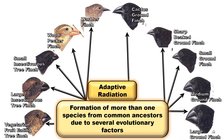We can define adaptive radiation as the formation of more than one species from a common ancestor due to several evolutionary factors. The tree-dwelling finches include fruit-eating finches, insect-eating finches, and the warbler finch. The ground-dwelling finches on the right side have developed seed-eating beaks. So from a common ancestor, these different species of finches were formed — a perfect example of adaptive radiation.